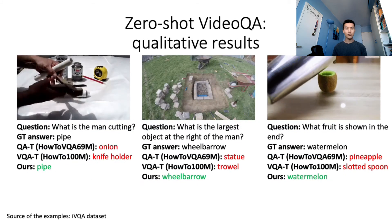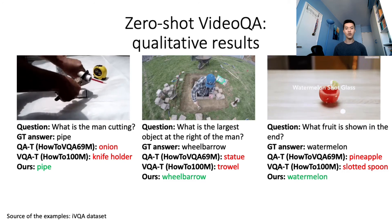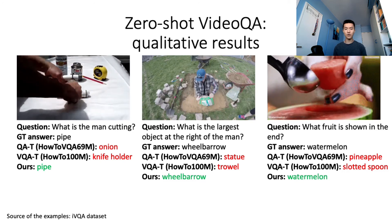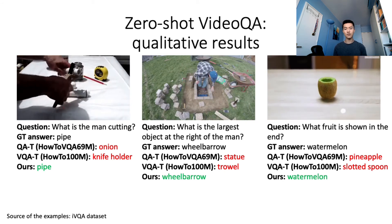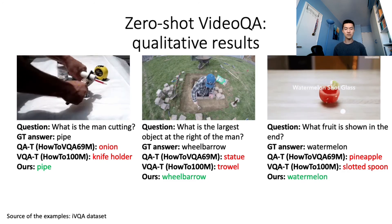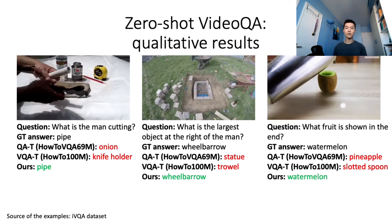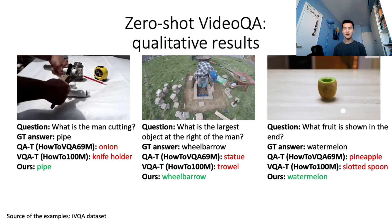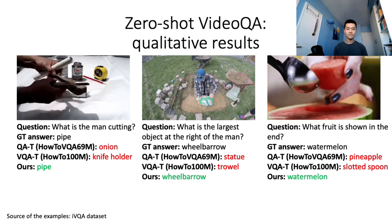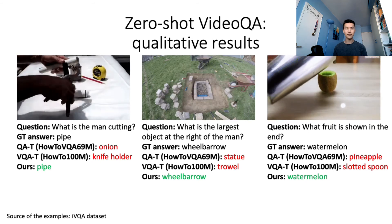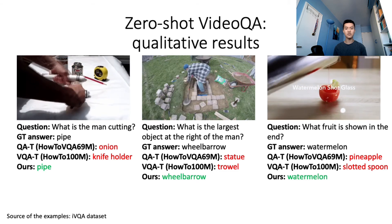Qualitatively, we observe that the language-only variant QA-T provides plausible but video-unrelated answers. For instance, 'onion' is a plausible answer to a question asking what is being cut. The variant VQA-T trained on HowToVQA69M is able to associate visual content with related answers — in one video there are objects that look like towels, and in another a slotted spoon appears at some point — but it fails to have a complex multimodal understanding. Our model trained on HowToVQA69M correctly understands these questions and uses visual cues in the videos to provide correct answers.